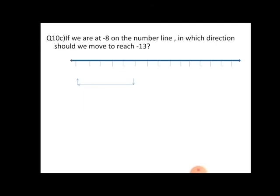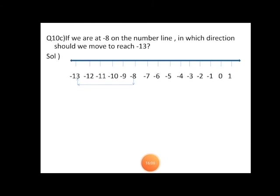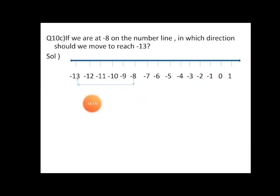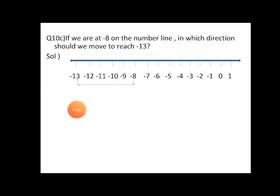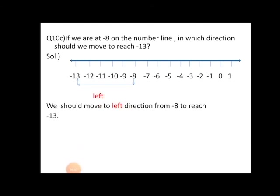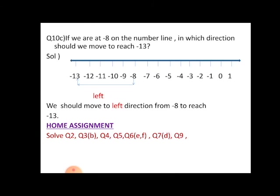Next question: if we are at minus eight on the number line, in which direction should we move to reach minus thirteen? Drawing the number line with all required numbers marked — starting from minus eight and moving towards minus thirteen, we are moving to the left direction. So we should move to the left direction from minus eight to reach minus thirteen.